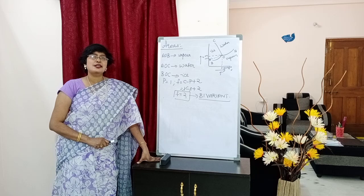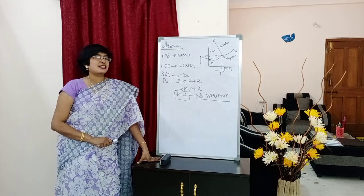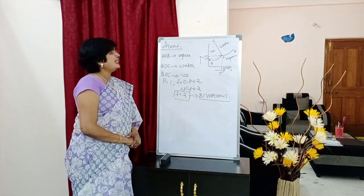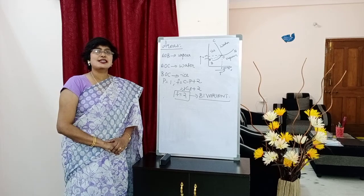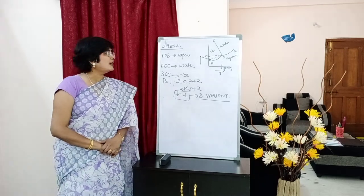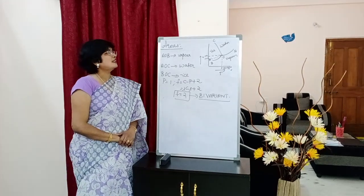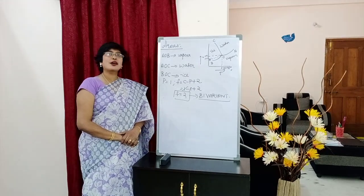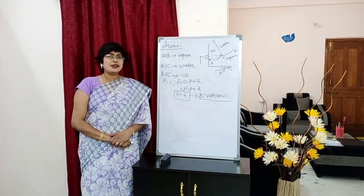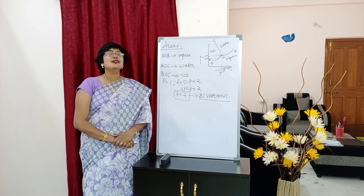After curves, we have various areas in the phase diagram of water system. There are three areas: AOB, AOC, and BOC. AOB consists of the vapor phase. AOC consists of the water phase. BOC consists of the ice phase. All three areas have only one phase, so P = 1.